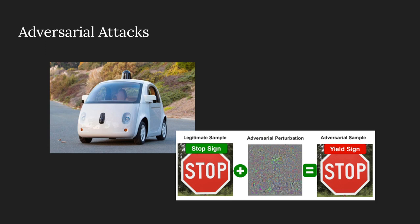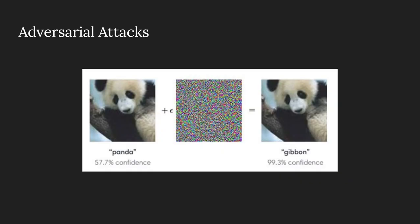These adversarial attacks came into the picture with most of the vision-related machine learning use cases. One of the famous examples is the image classification of a panda image problem. The human eye sees both pictures as pandas, but after making some changes to the first image, the machine classifies it as a gibbon with about 99% confidence. So we can say the second image is an adversarial sample.